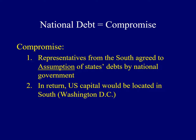Representatives from several southern states did not support assumption of state debt—they had already paid theirs off and didn't want to fund the debts of other states. But they did want the nation's capital to be located in the South. So they agreed to assumption in return for placing the new permanent location for the nation's capital in the South, along the Potomac River, in what is now Washington D.C.